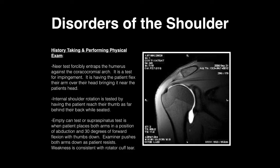Internal shoulder rotation is tested by having the patient reach their thumb as far behind their back while seated. The empty can test, or supraspinatus test, is when the patient places both arms in abduction at 30 degrees forward flexion with the thumbs down. The examiner pushes both arms down as the patient resists. Weakness is consistent with a rotator cuff tear.